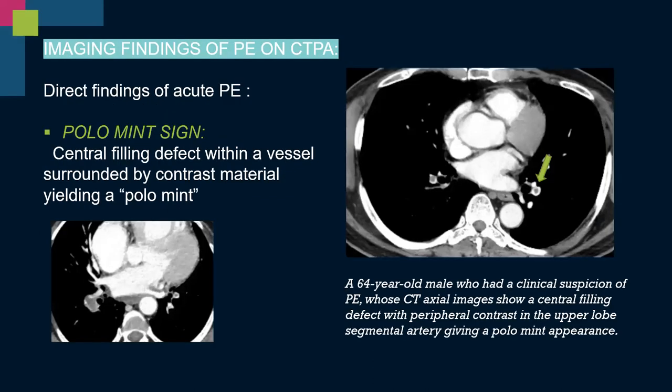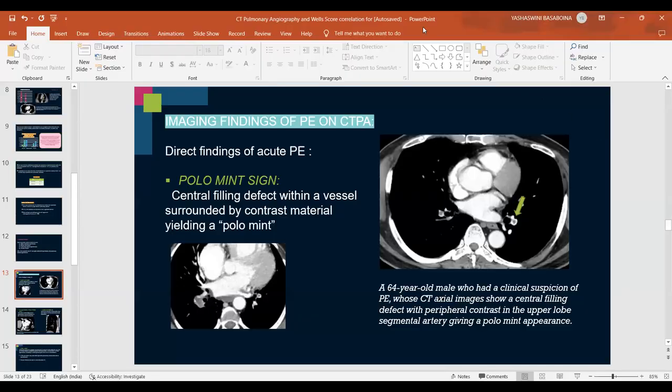Coming to the imaging findings of pulmonary embolism on CTPA, one sign observed was the polo mint sign — a central filling defect with peripheral contrast yielding a polo mint appearance. These images show the polo mint sign. A 64-year-old male with clinical suspicion of pulmonary embolism had CT axial images showing a central filling defect with peripheral contrast in the upper lobe segmental artery, giving the polo mint appearance.